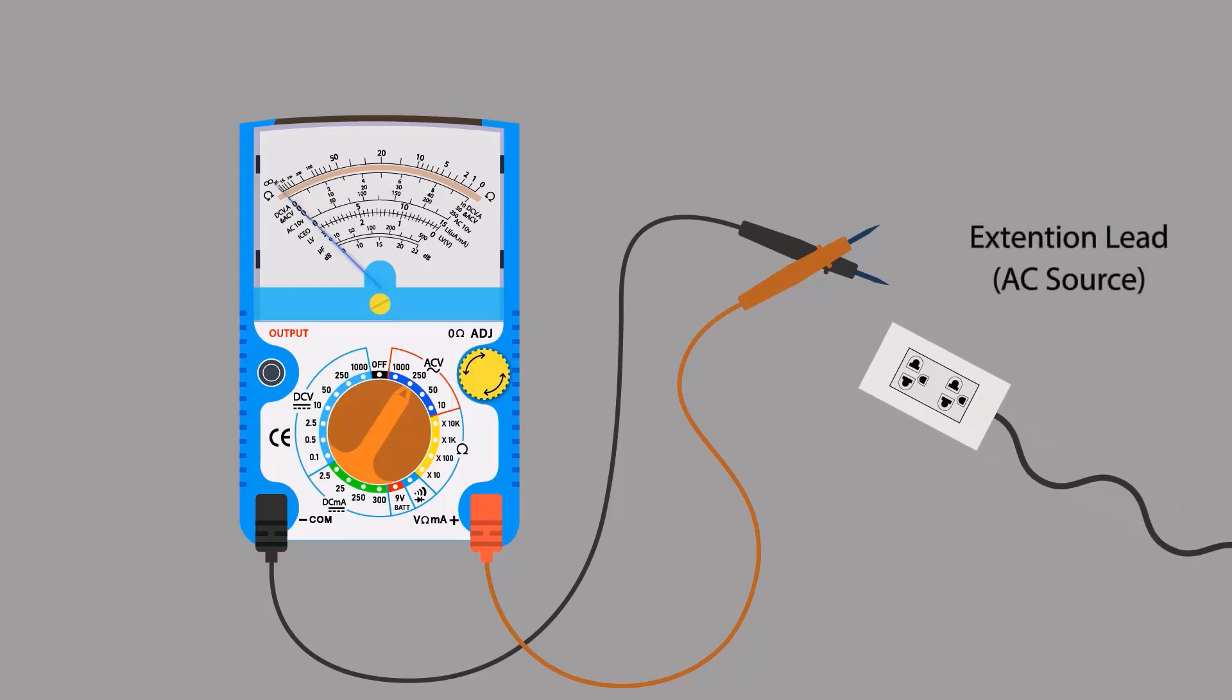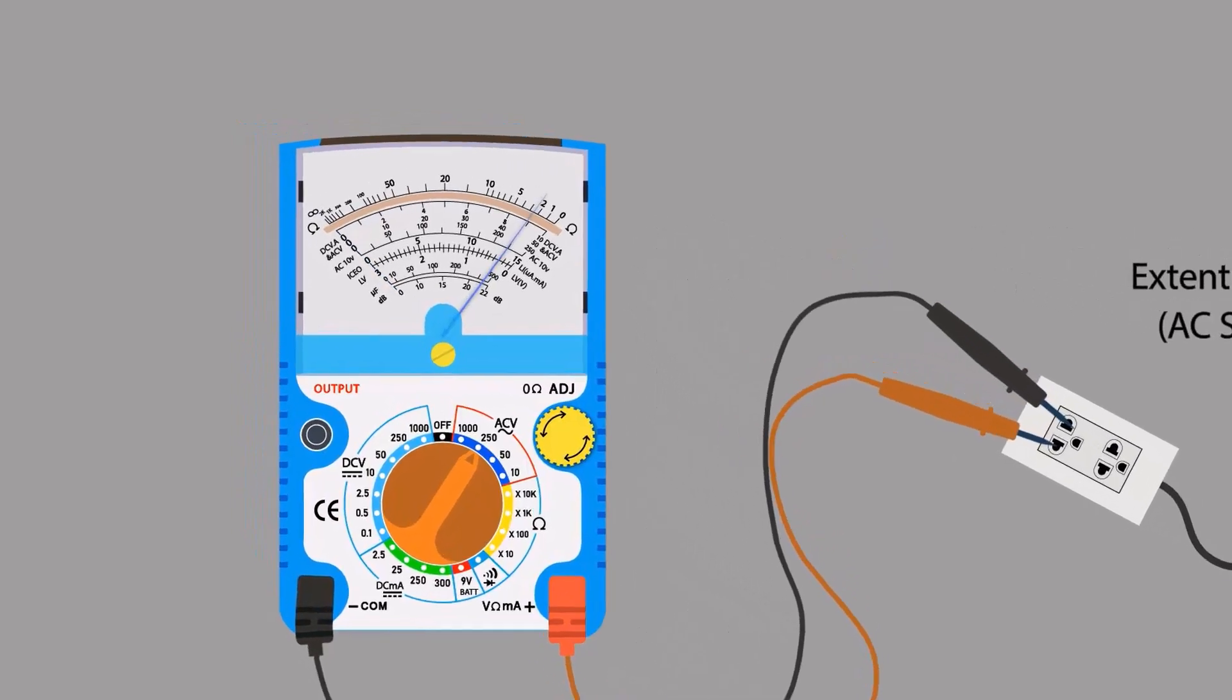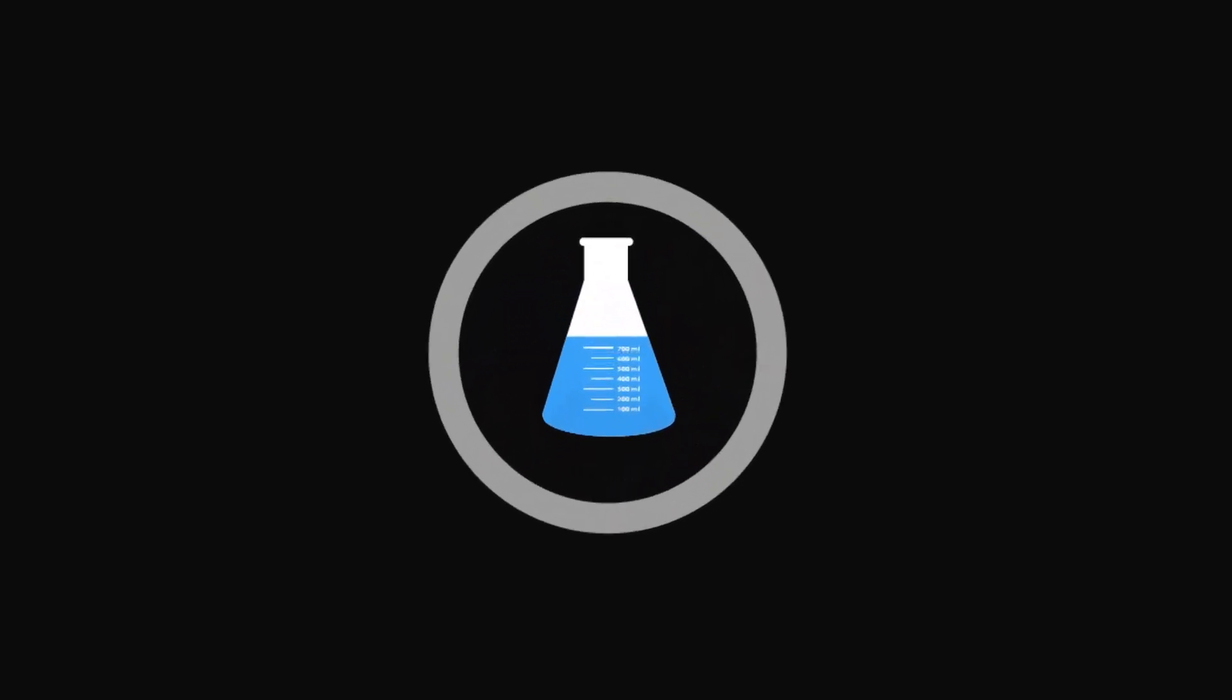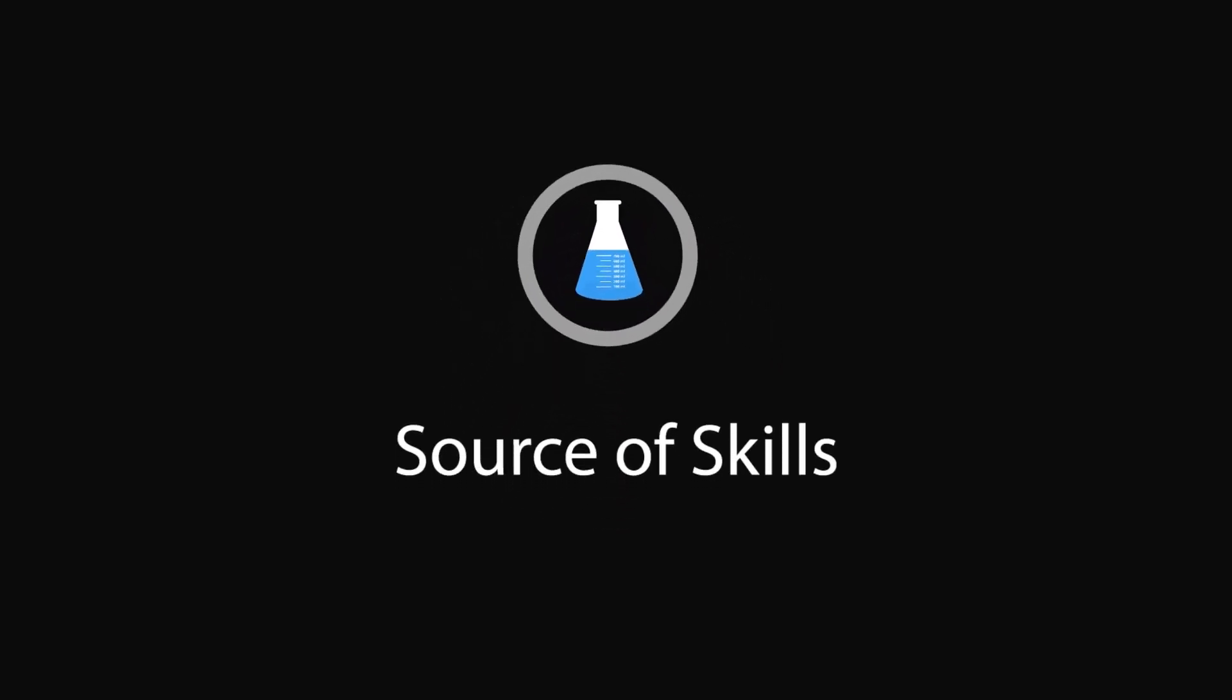In this animation you will learn how to measure AC voltage with the help of an analog multimeter. Hello guys, welcome to our YouTube channel, Source of Skills. Please like and subscribe for more informative videos.